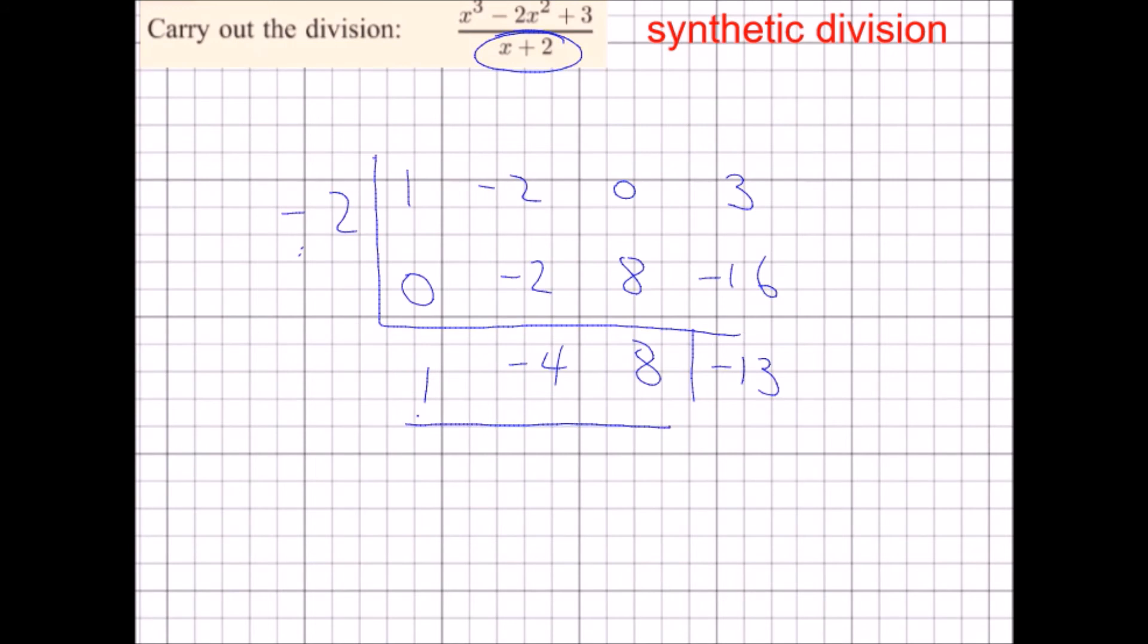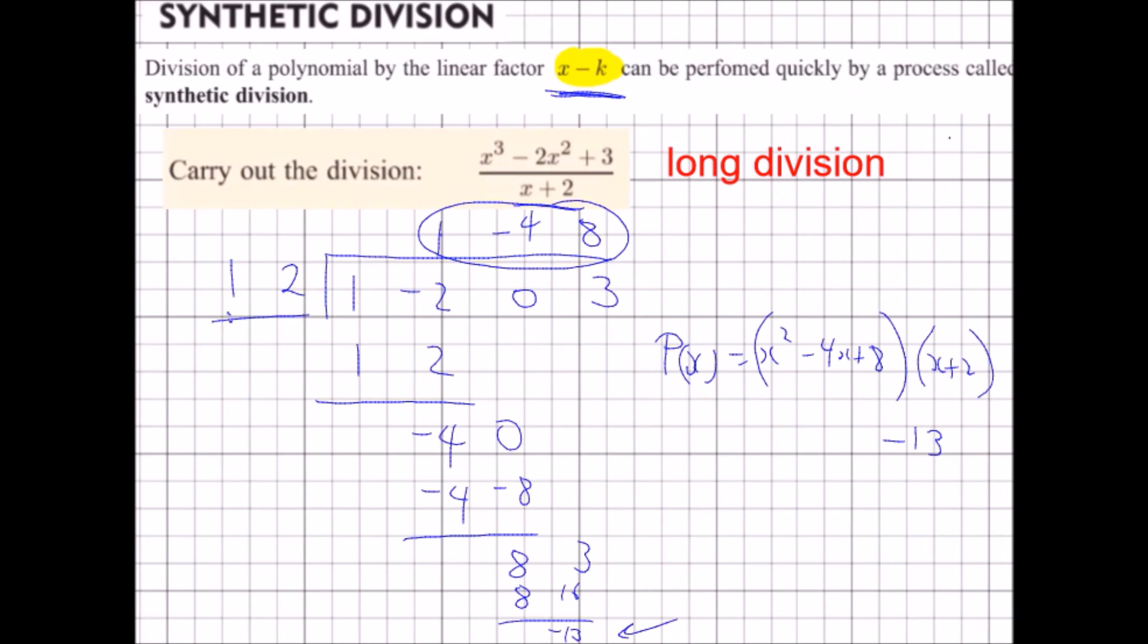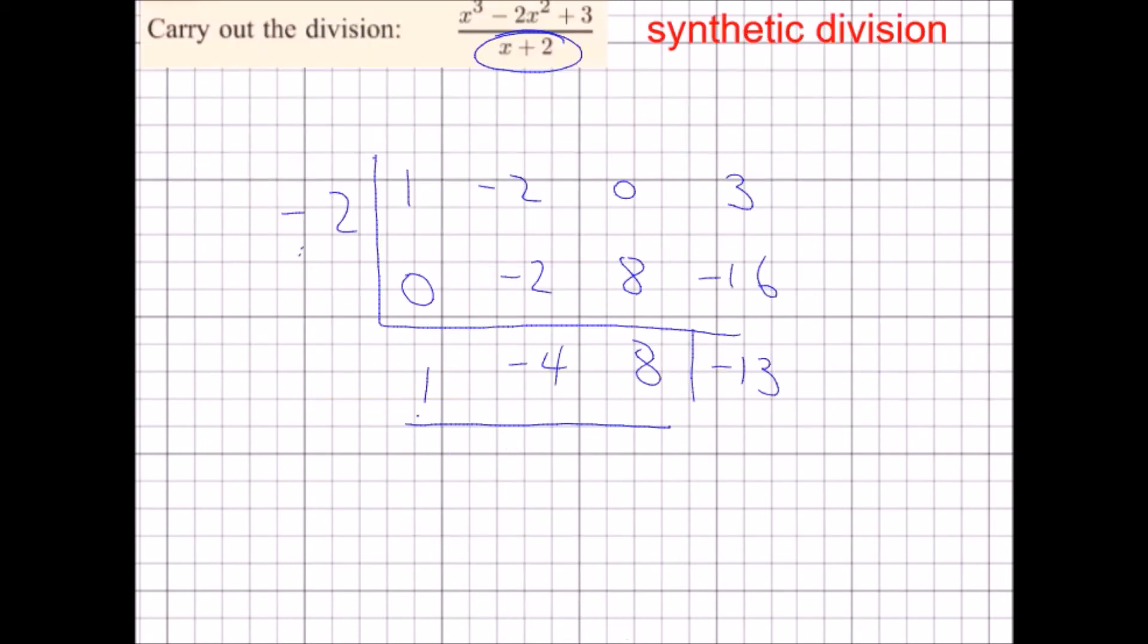And notice, 1, negative 4, and 8. With my long division, 1, negative 4, and 8 were the values I had up here for my quotient, and the remainder was negative 13, as it is over here.